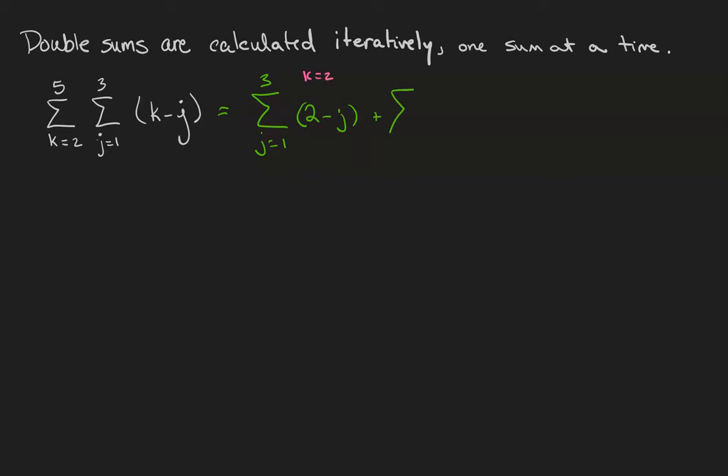Plus the sum from 1 to 3 of 3 minus j. This is the k equals 3 term. Plus the sum from 1 to 3 of 4 minus j. This is the k equals 4 term. Plus the sum from 1 to 4 of 5 minus j. This is the k equals 5 term.